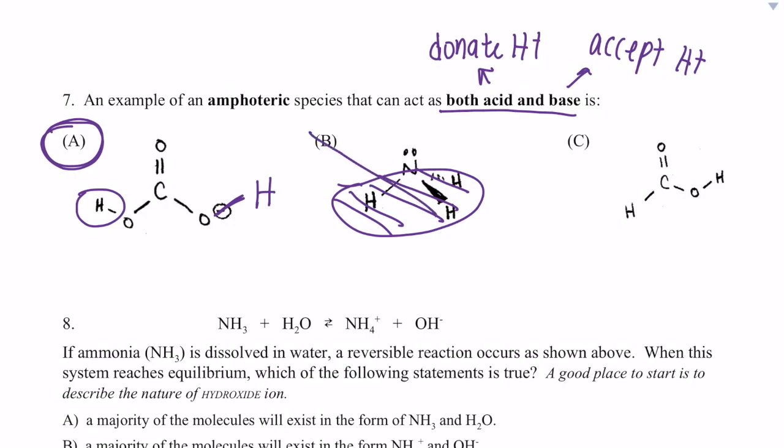So B is not a good answer. And for C, there is a place where it can donate a proton. Here is our polar hydrogen. It will donate that. But there is nowhere on the molecule where it can gain a proton. It will not gain a proton here. So A is the answer.